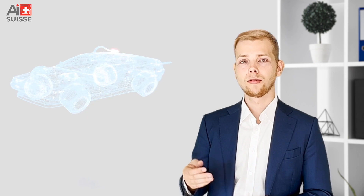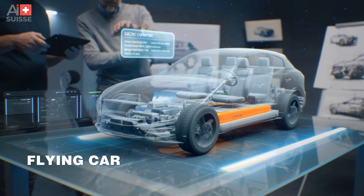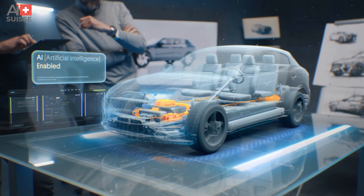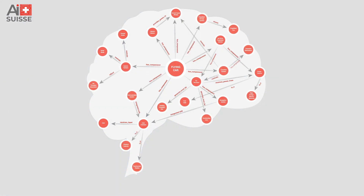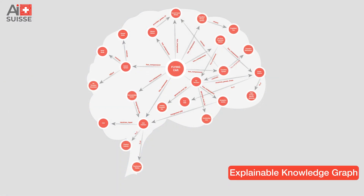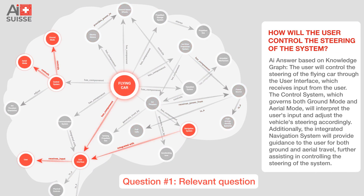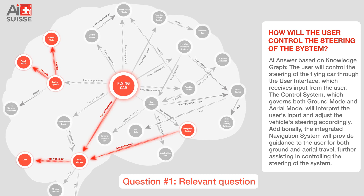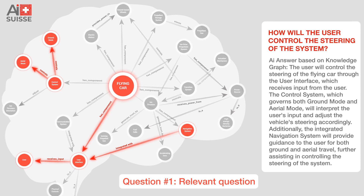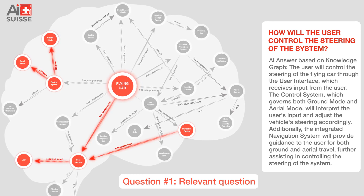Imagine you have an innovation for a flying car. We're able to turn the specification into a robust knowledge graph. Now let's ask a question to this AI model: 'How do I steer this car?' We see that it not only returns the correct answer, but also is able to give a source as to where the information came from, mentioning the user interface.